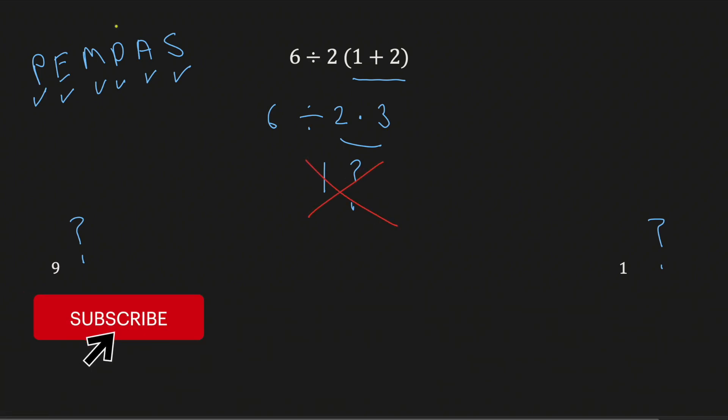Instead, in this acronym, multiplication and division have equal precedence. That is, we do multiplication and division in order from left to right. Multiplication does not have greater precedence than division.